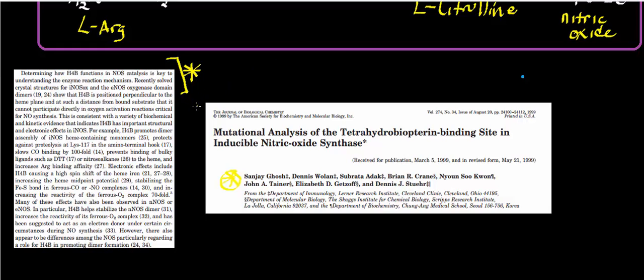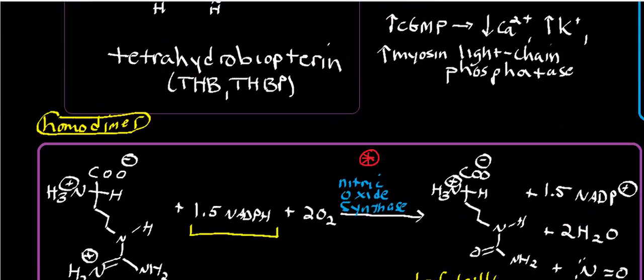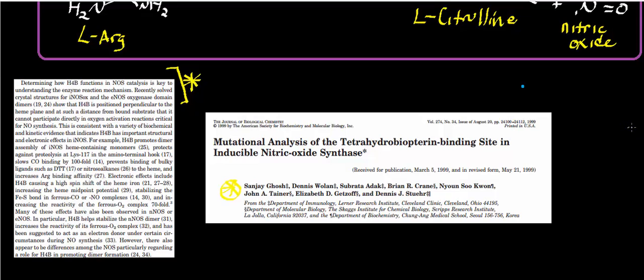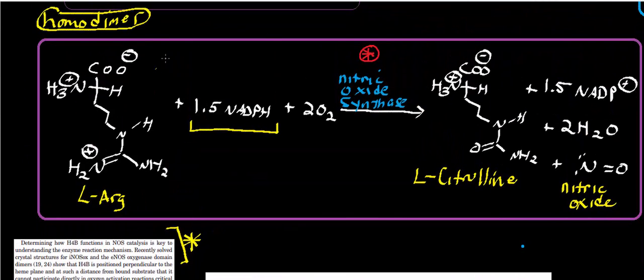For example, tetrahydrobiopterin slows the binding of carbon monoxide a hundredfold — important because heme is really good at binding CO even more so than oxygen. It also prevents the binding of bulky ligands like DTT and nitrosyl alkanes to the heme. Additionally, it provides an increase in arginine affinity, so by allowing arginine to bind more easily, it facilitates the reaction.